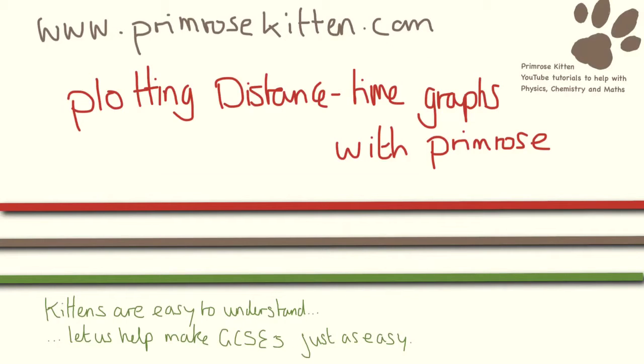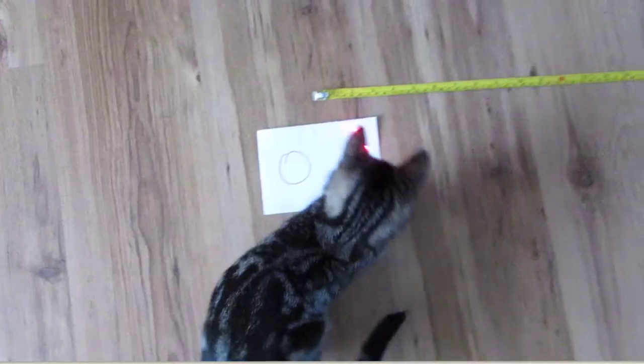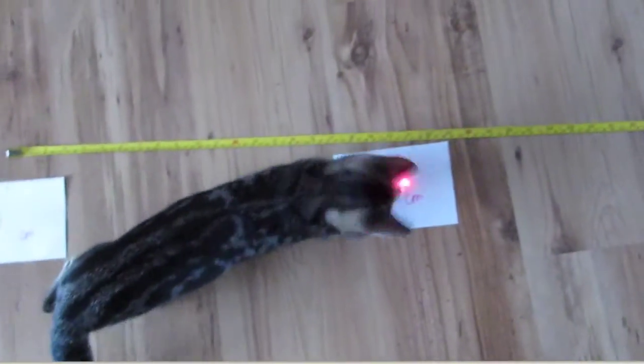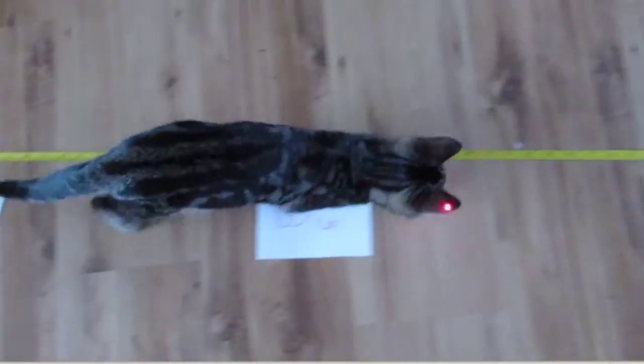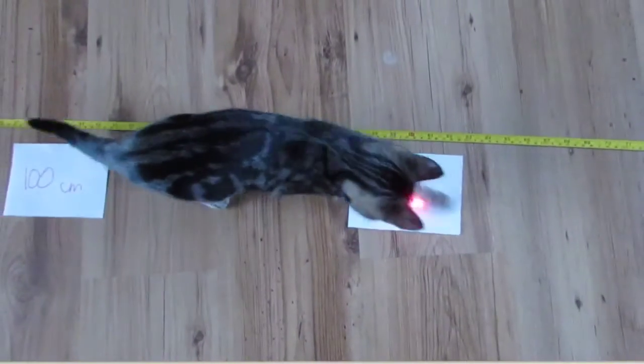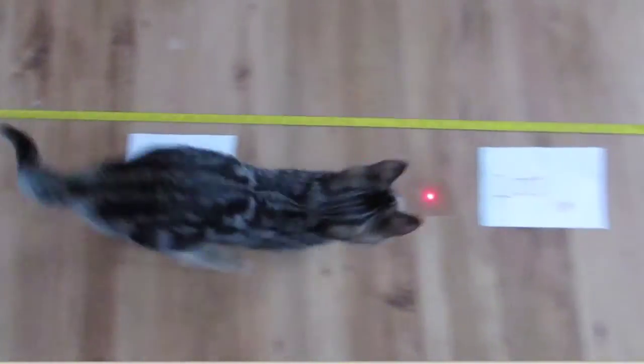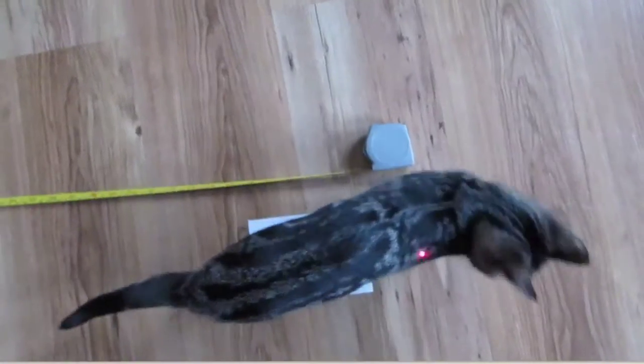Here I'm going to use Primrose to plot distance time graphs for me. So I have set up a ruler and plotted out the distances and I'm sending Prim along the line so that we can plot out a distance time graph of her travels.